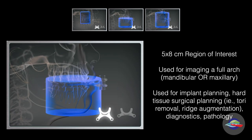The next step up in the field of view is a 5 by 8 centimeter region of interest. This is used when we're interested in imaging a full arch — so either the mandibular or the maxillary. We often use this field of view to plan for multiple upper or lower implants, when developing a surgical plan for hard tissue surgery such as tori removal, if we're doing a sinus augmentation or ridge augmentation. We also use this view to monitor and assess pathology, such as the growth of a cyst or even in diagnostics.